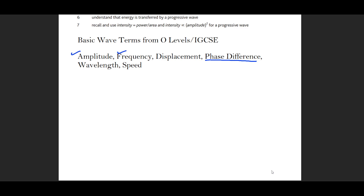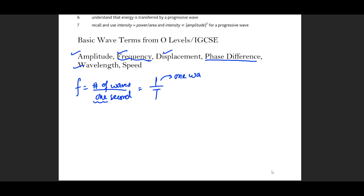Frequency is the number of waves completed in one second. Cambridge now specifies students must write 'number of waves per one second' exactly. The formula is f = 1/T, because we look at one wave and the time taken for that one wave. The unit of frequency is Hertz (Hz).